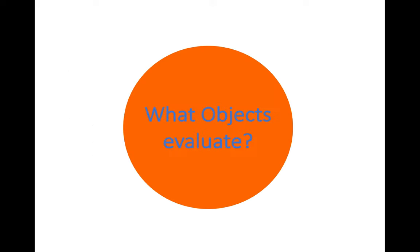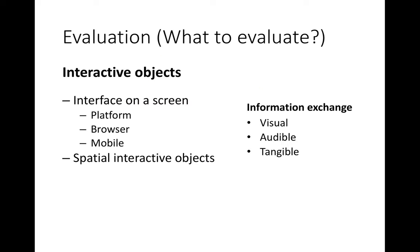What objects do we evaluate usually? We evaluate different things — all interactive objects need to be evaluated, and interactions need to be set up and evaluated. We can evaluate an interface on a screen, like a platform, a browser, or a mobile interface. Or we can evaluate special interactive objects and go deeper into specific things within our product, like visual, audible, tangible aspects, and so on.